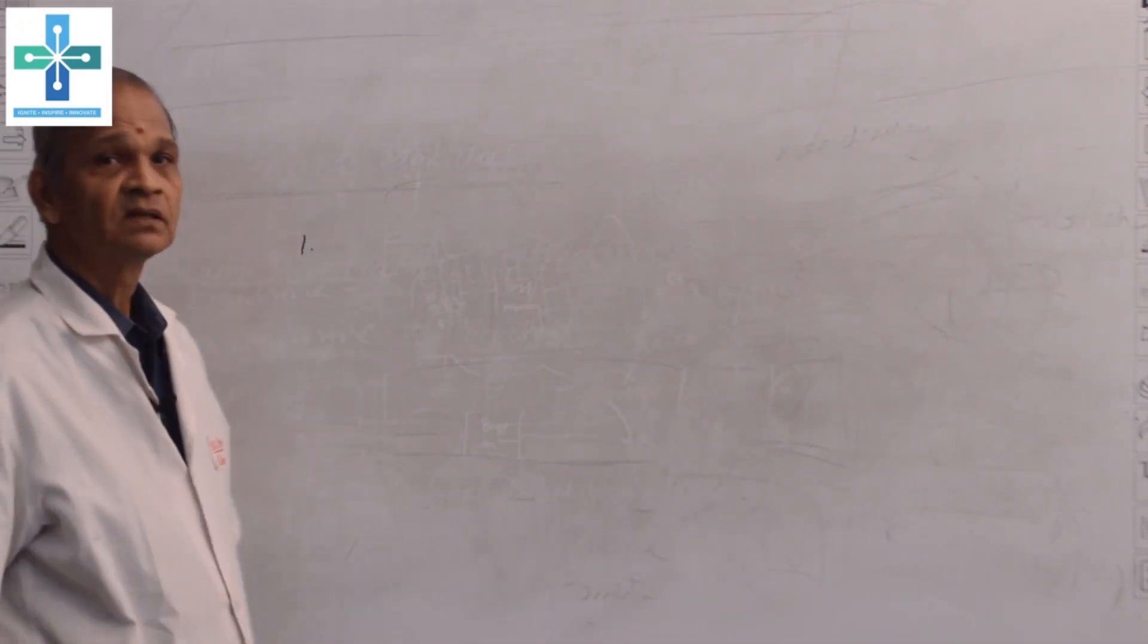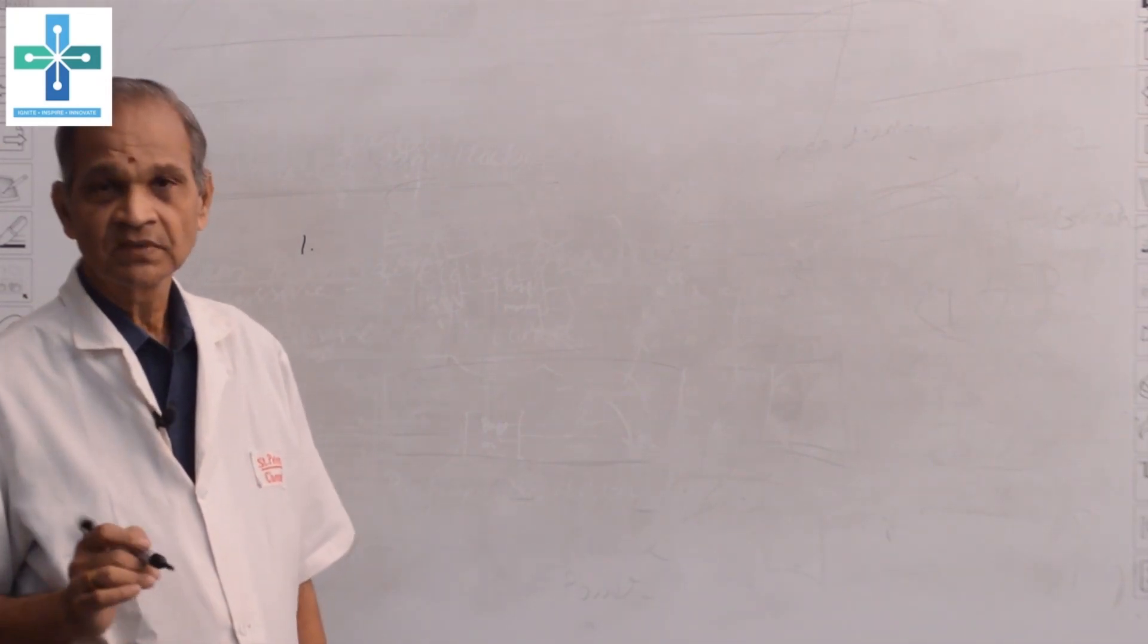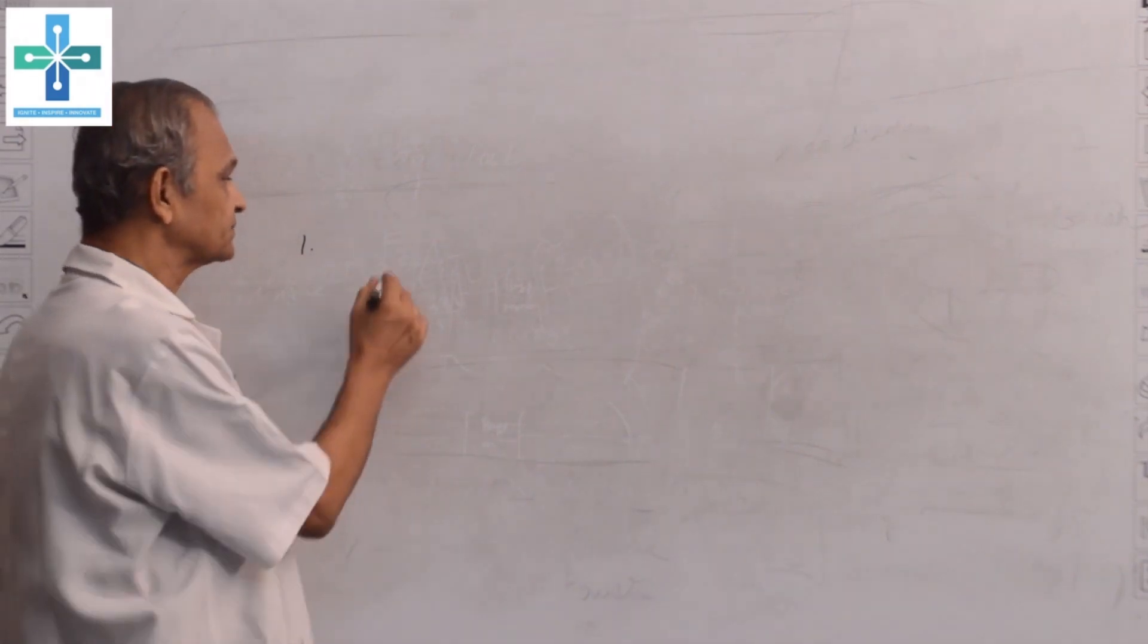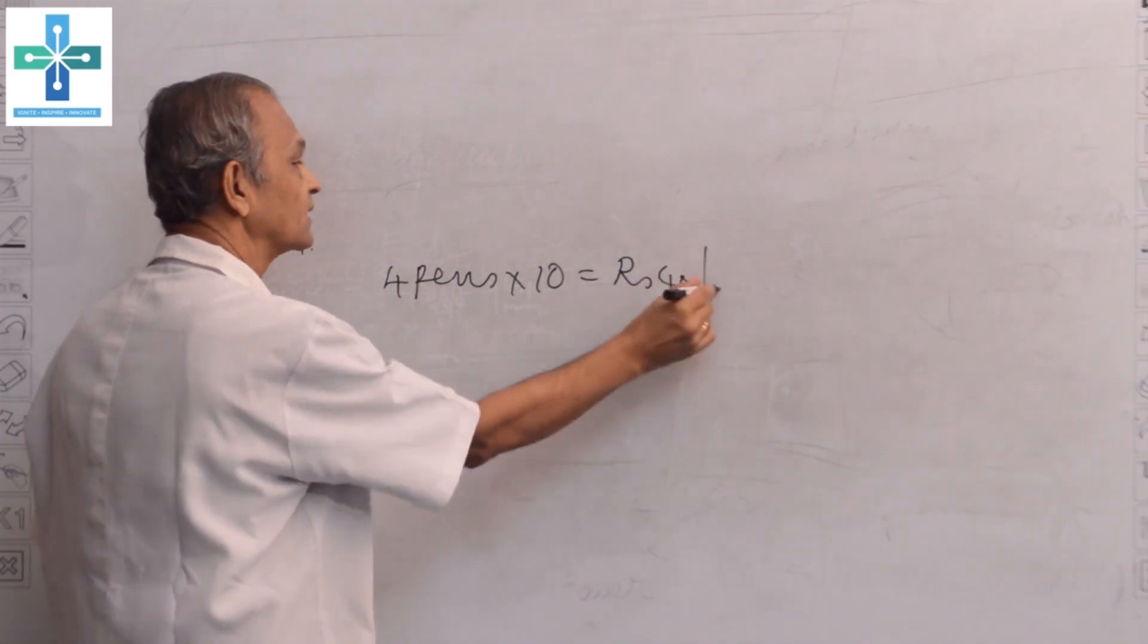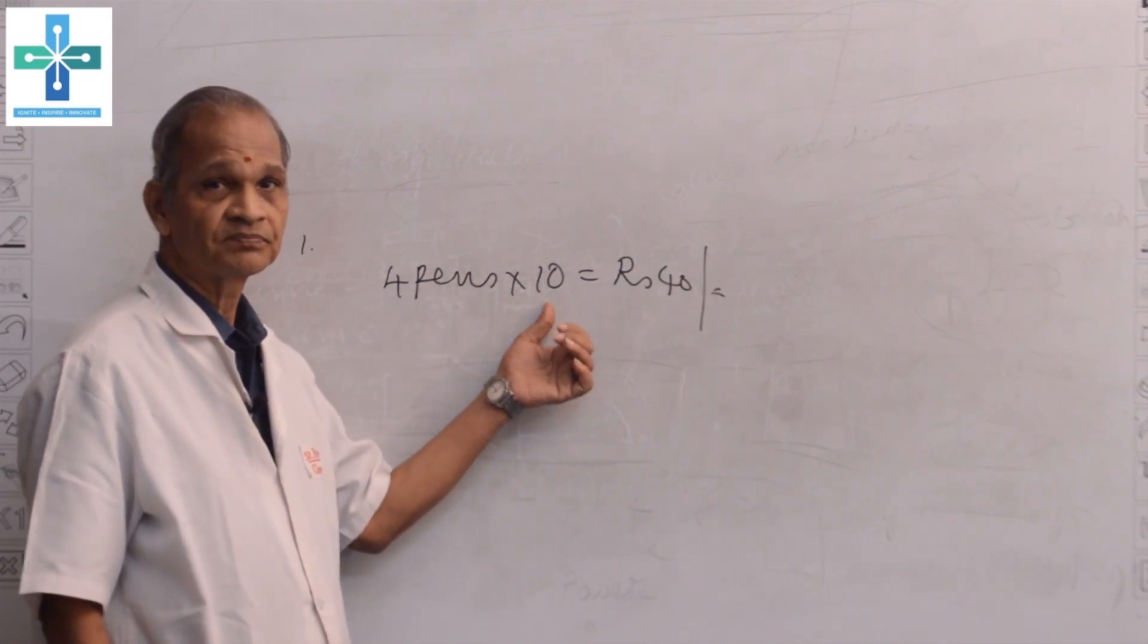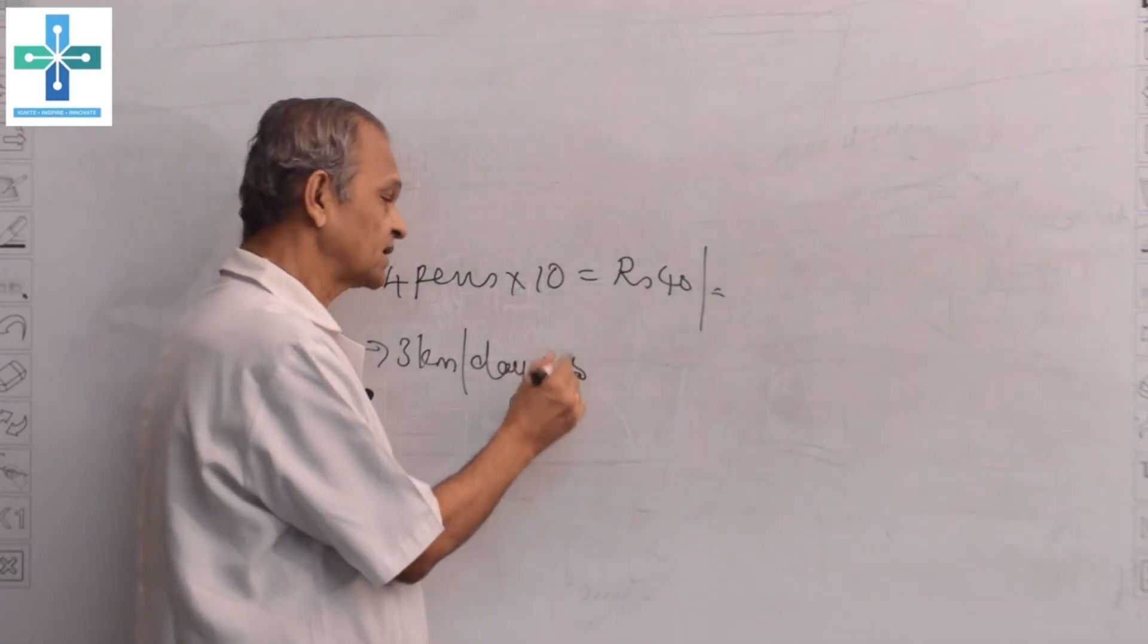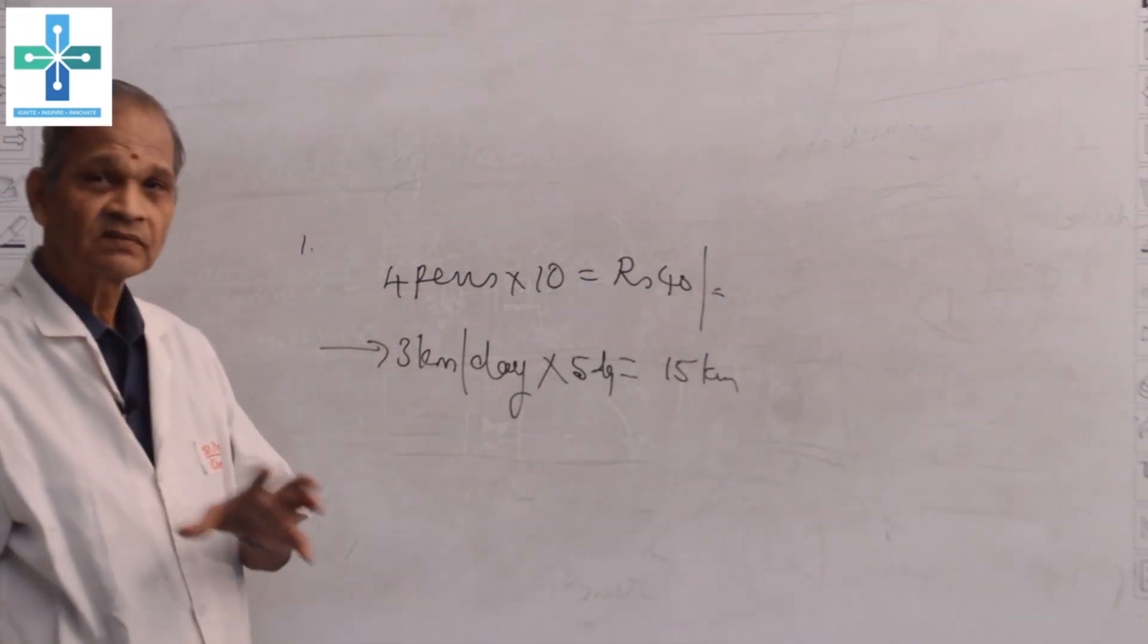Consider the following examples. In mathematics, we have addition, multiplication, subtraction, division. In these cases, we cannot apply in all concepts. For example, if you want to buy 4 pens, each 10 rupees, we write rupees 40 is the cost. We multiply the number of items by the cost. Suppose a person is traveling 3 kilometers per day, in 5 days he traveled 15 kilometers. This is simple arithmetic.